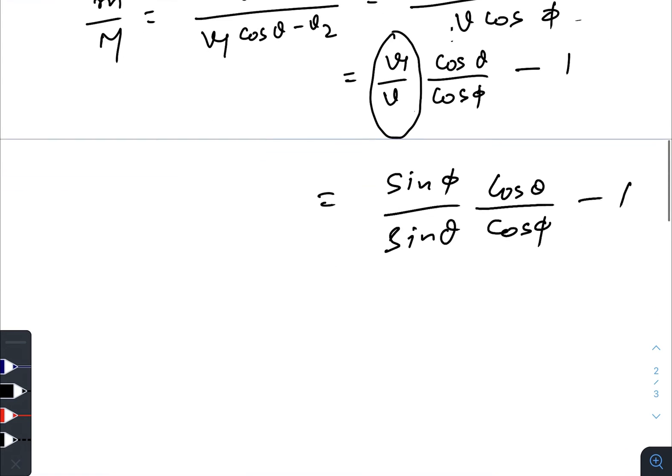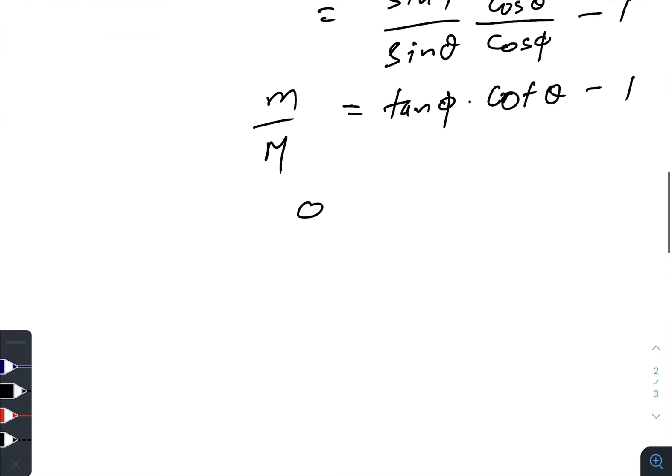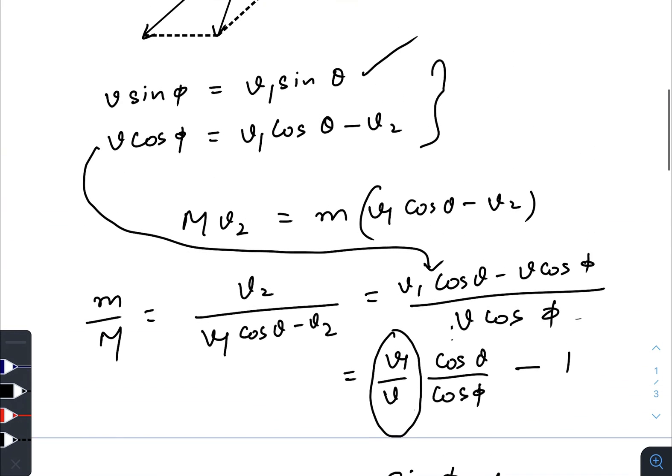That gives you tan phi times cot theta minus 1. So this is our required ratio. Now just put phi equals 60 degrees, theta equals 30 degrees. You will get root 3 times root 3, that is 3, minus 1, equals 2. So this is our final answer.